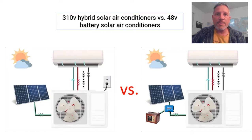Hi folks, Dave with Airspool here. Yes, the rumor is true—it's now possible to run an air conditioner directly off solar panels. Today we're going to talk about the two most common types for home use: the 310-volt hybrid unit and the 48-volt battery unit.